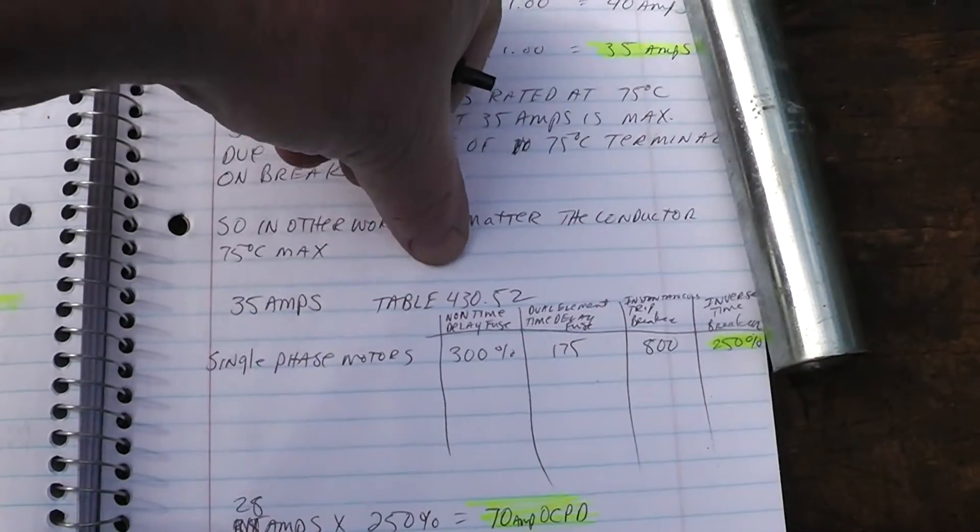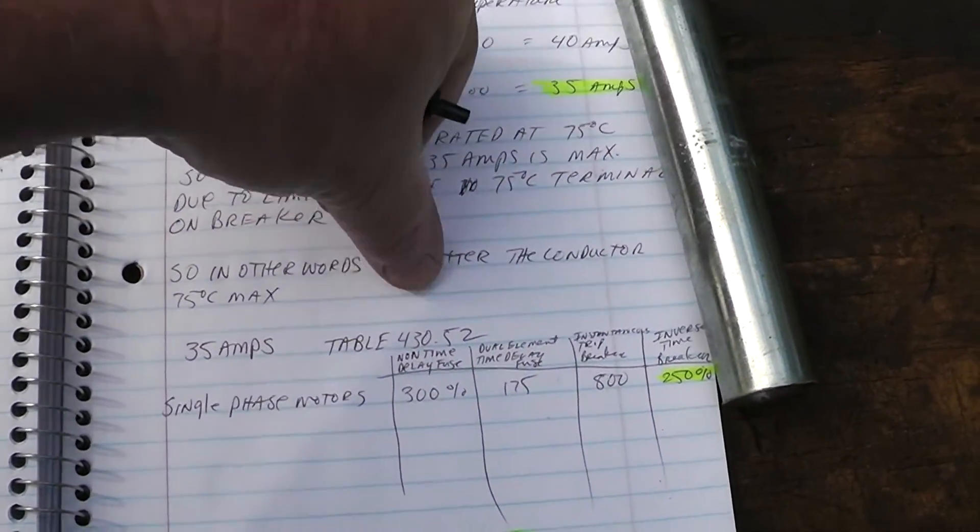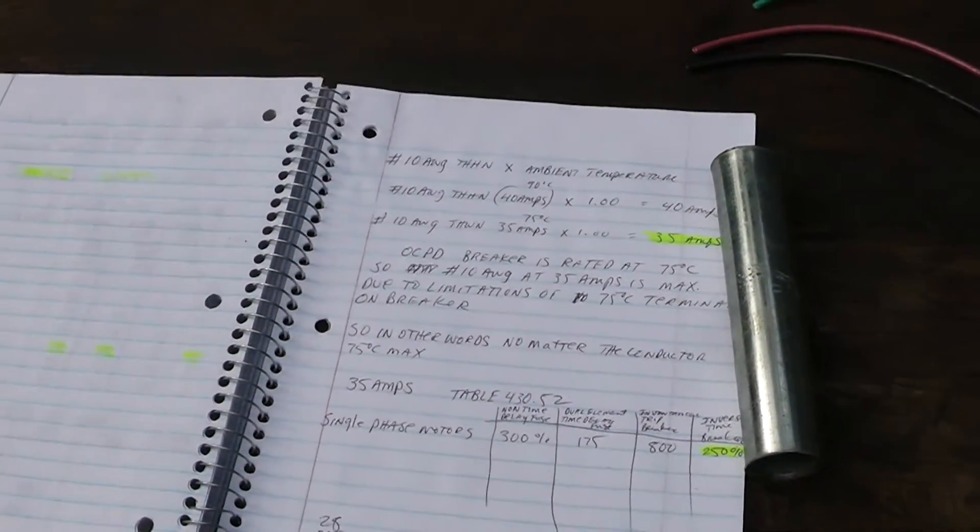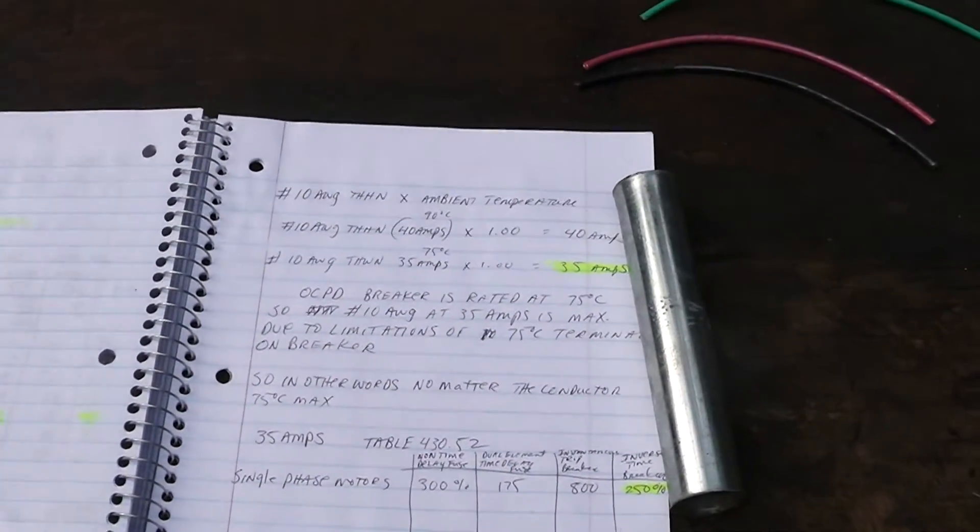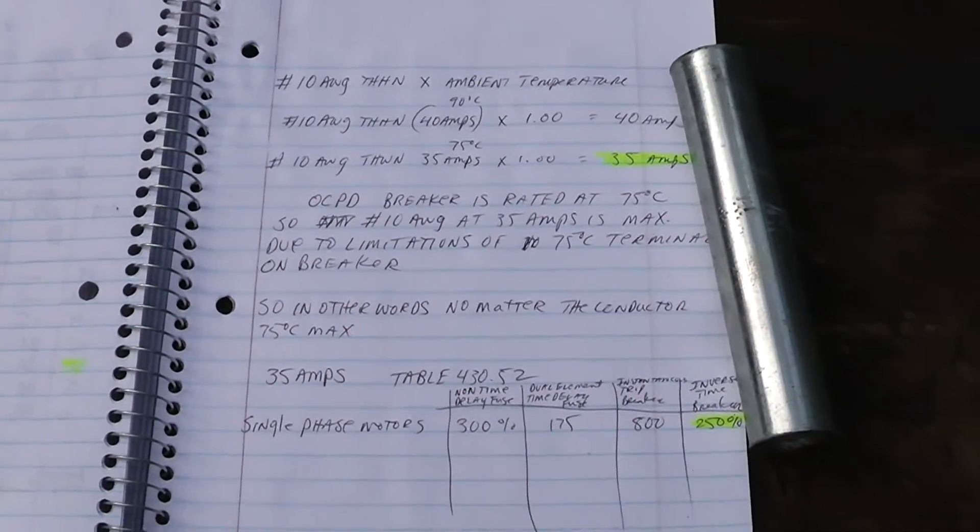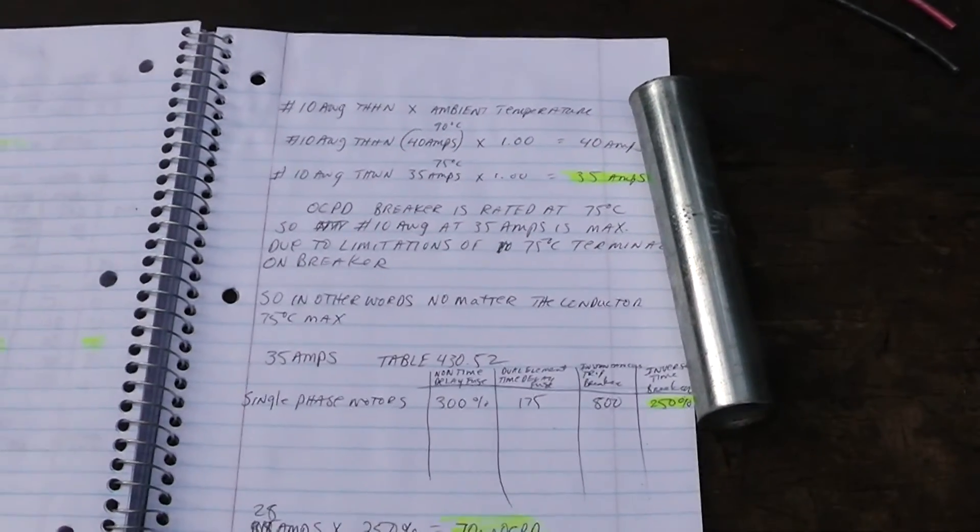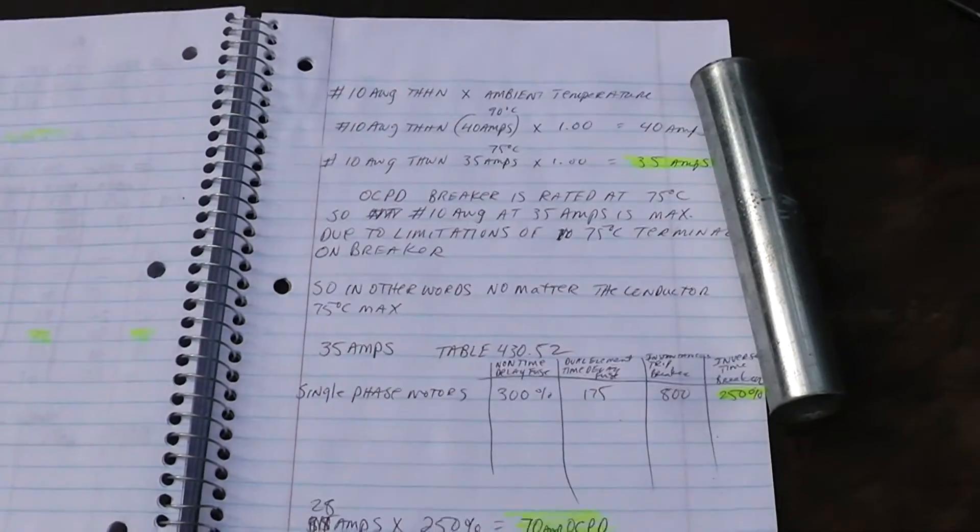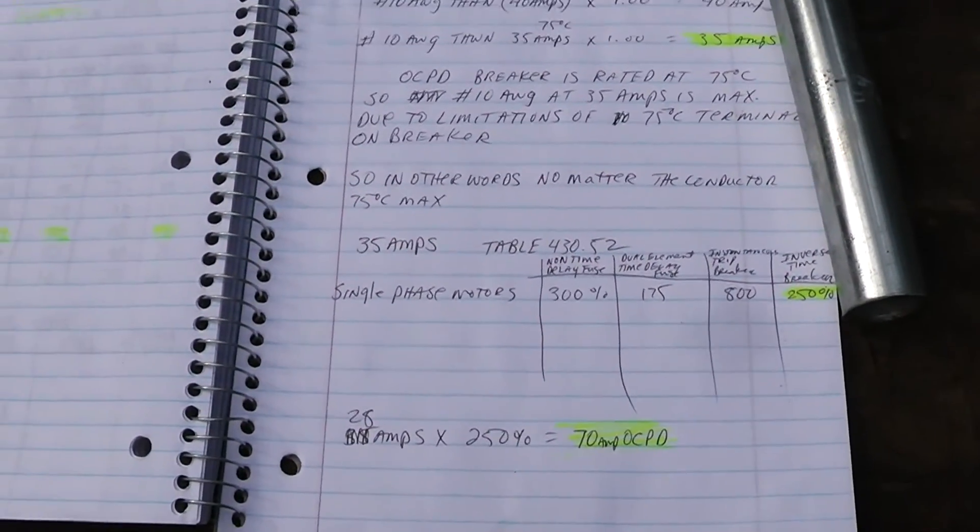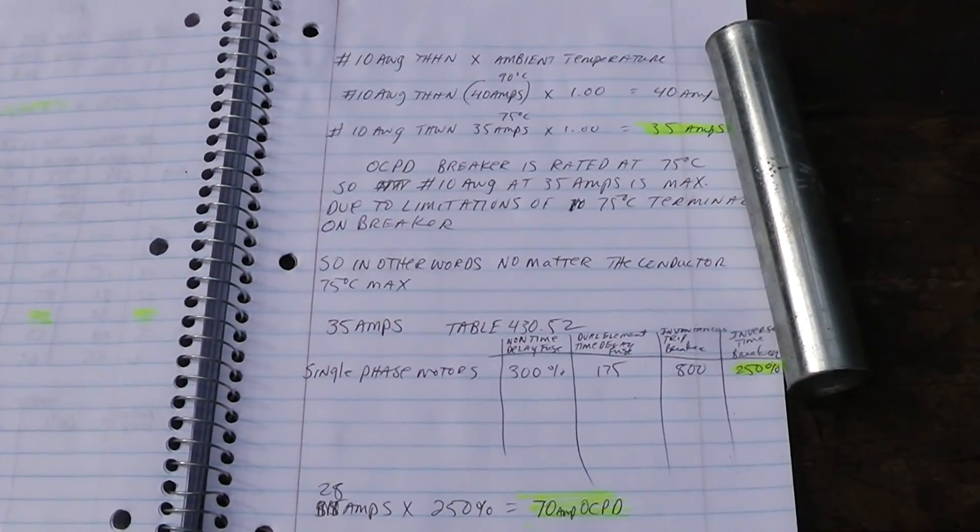This is NEC all the way. Motors are very confusing, even to people who are going to be taking their journeyman's test or their master electrician's test. They put this stuff on there and a lot of people can't handle that. I hope this was somewhat informative. Homestead Prepper out.